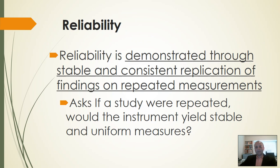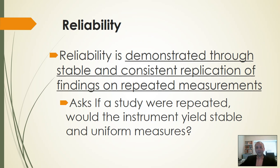On that note, things can be reliably wrong. Say vehicles are going 40 miles an hour and the radar gun is clocking them at 50 — 50 every person going by. So it's 10 off, but it's reliably wrong. Just because something's reliable doesn't necessarily mean it's valid; it needs further investigation. But reliability is one component of validity. It asks: if a study were repeated, would the instrument yield stable and uniform measures?